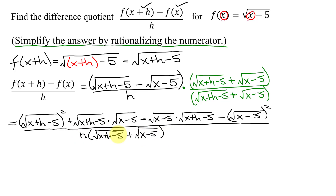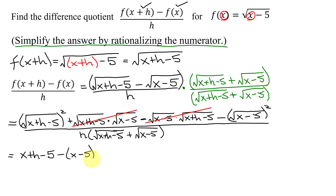Don't multiply out the denominator — leave it as is. Notice in the numerator the two middle terms are the product of the two radicals with opposite signs, so they add up to 0. We're left with the difference of two squares: squaring the first square root gives x+h minus 5, and squaring the second gives minus the quantity x minus 5 — and I must put parentheses around that since I'm subtracting the whole expression.